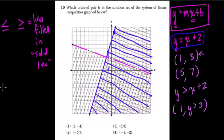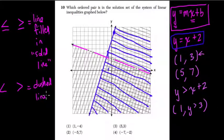But if you see the less than or greater than sign, then you'll have a dashed line, because the y value can't be on the line itself.